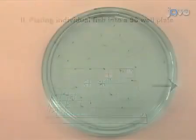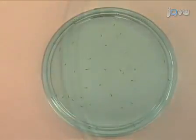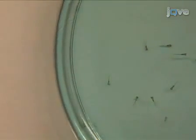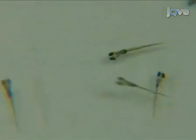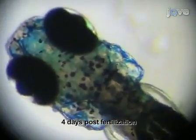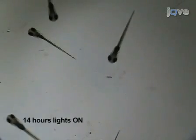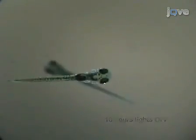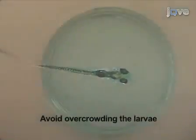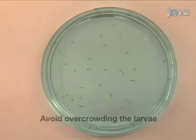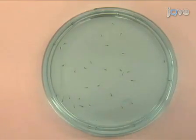To begin the visual motor response assay, first grow wild type zebrafish larvae under a dark light cycle at 28 degrees Celsius until at least four days post fertilization. Our typical light-dark cycle is 14 hours of lights on starting at 9 a.m. and 10 hours of lights off starting at 11 p.m. For the best behavioral results, avoid overcrowding the larvae. We usually keep no more than 50 larvae in a single petri dish.